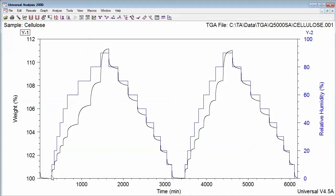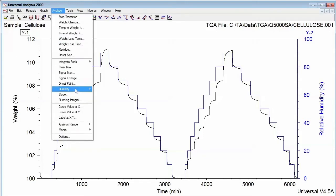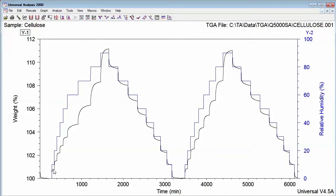This data file can then be further analyzed by selecting Analyze, Humidity, Sorption Isotherm. The last data point for each RH step will be used to generate this plot.